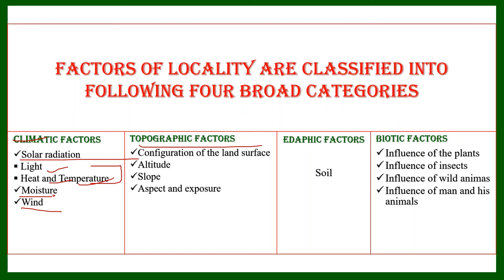After that, we have the topographic factors, under which we will study the configuration of the land — whether the land is plain or has hilly terrains. We will also study altitude, slope, aspect, and exposure. The aspect is the direction towards which a slope faces, and the exposure is the relationship of a particular site to its weather conditions.